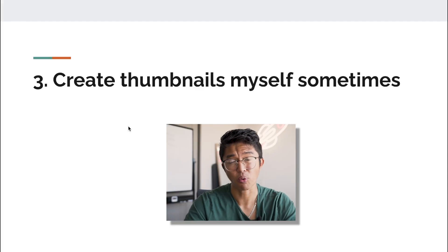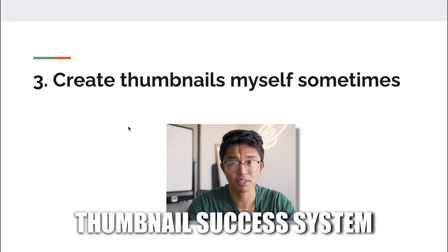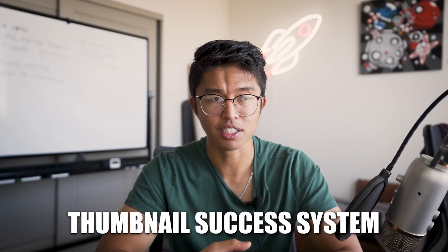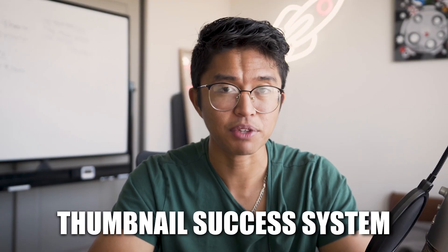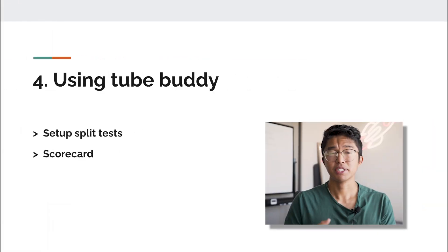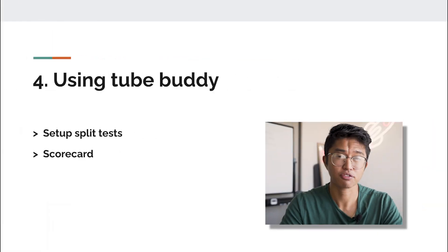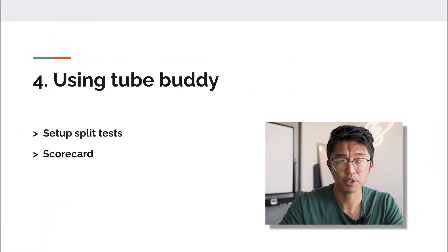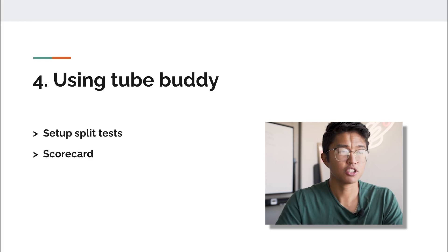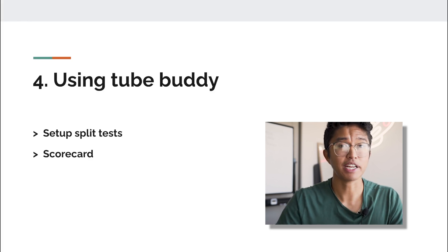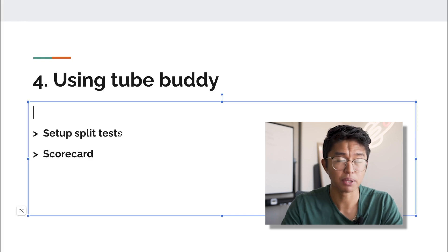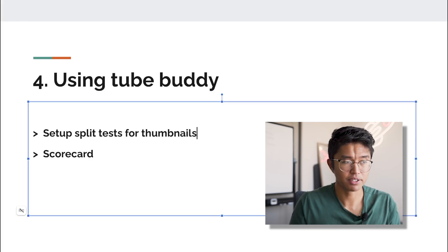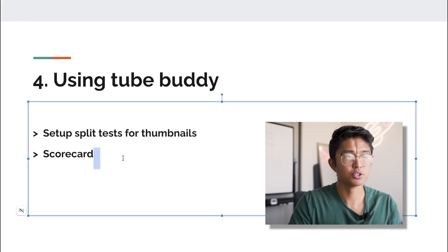This is also why I have a thumbnail success system within the YouTube success system, where I teach people how to use Photoshop to create thumbnails themselves. The fourth reason I've made over $370,000 from YouTube ad revenue is by using TubeBuddy. The two main features I use from TubeBuddy — and just as a disclaimer, it is a paid plan — are setting up split tests for thumbnails and using the scorecard for competitor research.